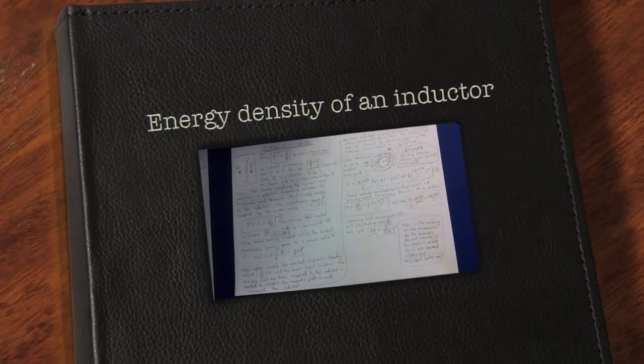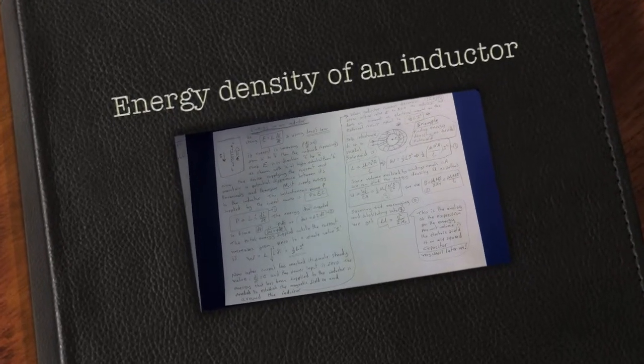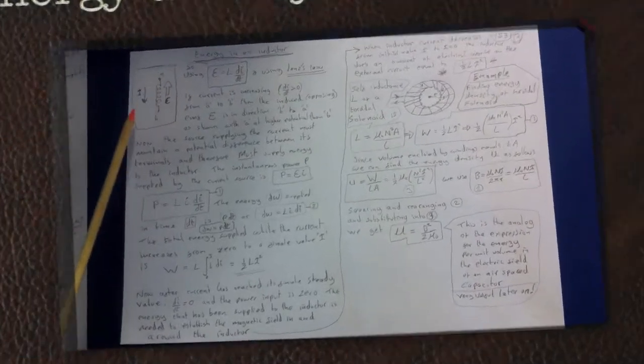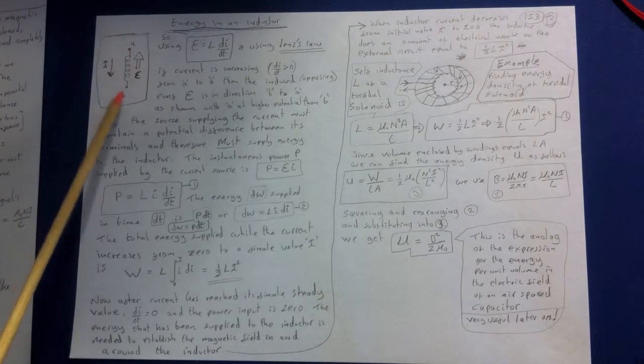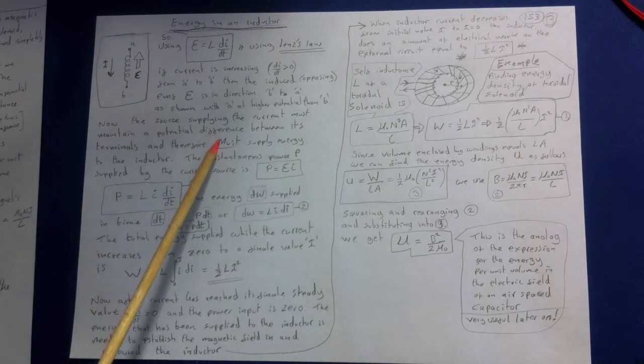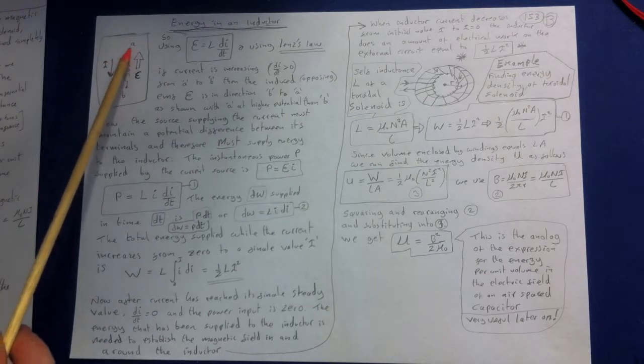We can also consider the energy to be associated with the magnetic field itself, where we've got this EMF going in the opposite direction and the current coming from A to B. Now the source supplying the current needs to maintain that potential difference here, because if the current is increasing, it's producing this EMF that's opposing it.